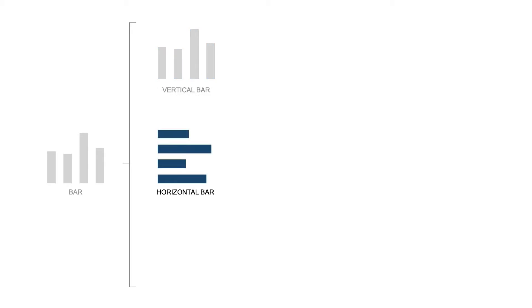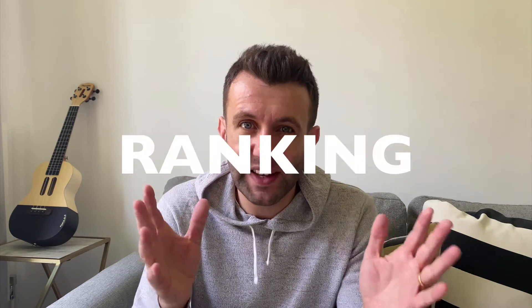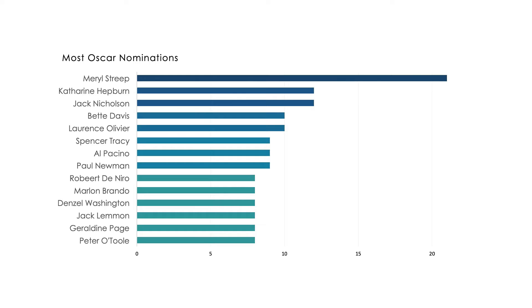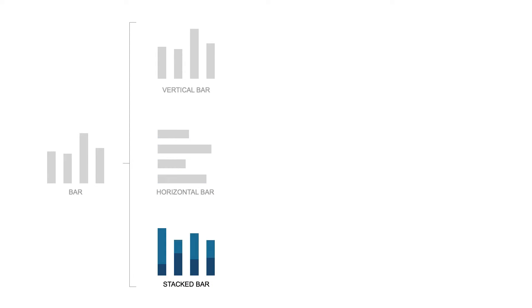If you absolutely must have between seven and fifteen different data points, flip your vertical bar chart on its side and you have a horizontal bar chart. These are best when you want to communicate ranking — things like election results, like this chart about the London mayoral elections showing candidates ranked by votes. They're also great for performance stats like sales performance, or this example showing Oscar nomination performance.